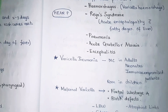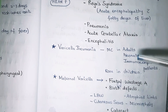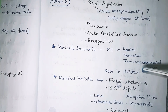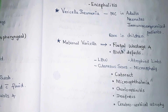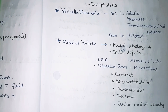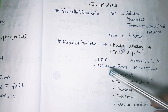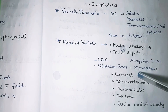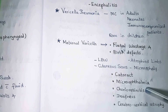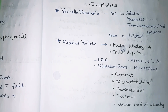Varicella pneumonia is most common in adults, neonates, and immunocompromised patients, but rare in children. Maternal varicella can result in fetal wastage and birth defects including low birth weight, cutaneous scars, atrophied limbs, and microcephaly. Additional features include cataract, microphthalmia, chorioretinitis, deafness, and cerebrocortical atrophy.